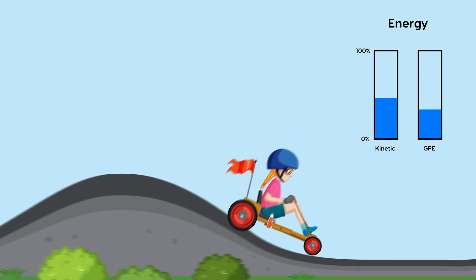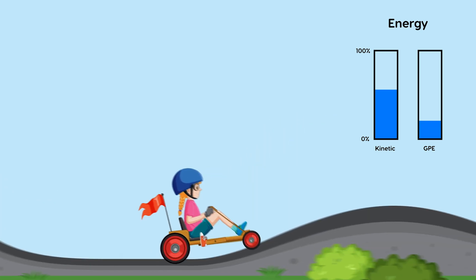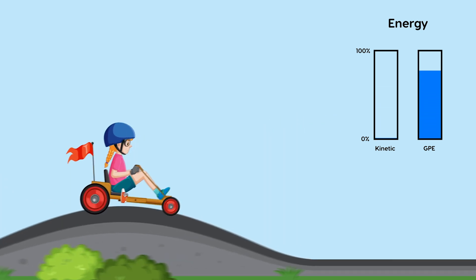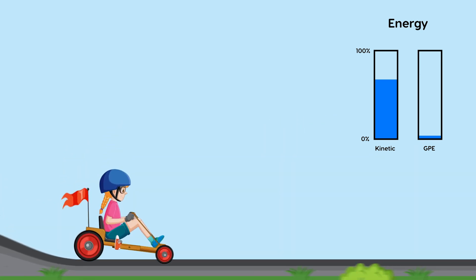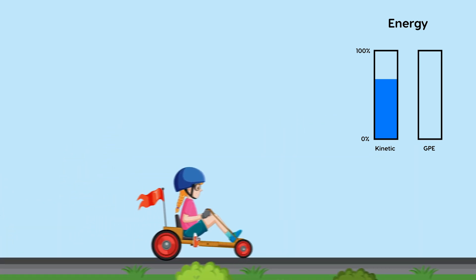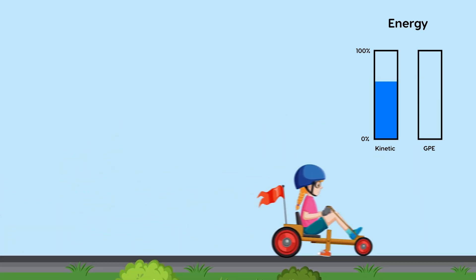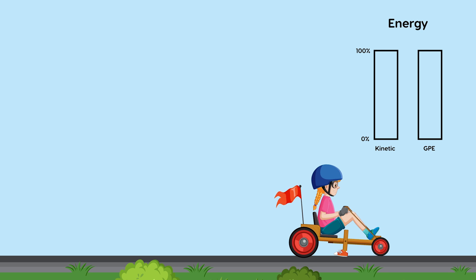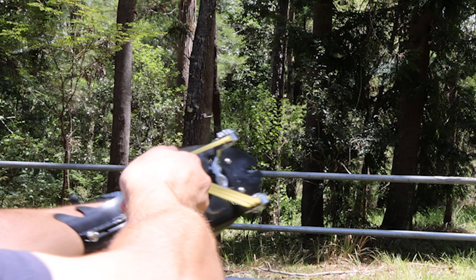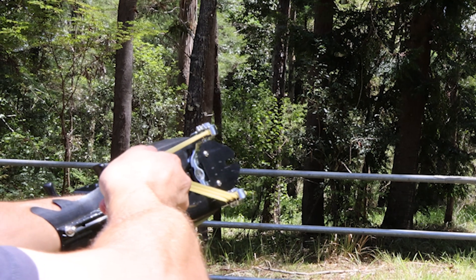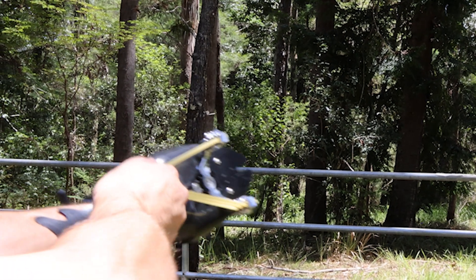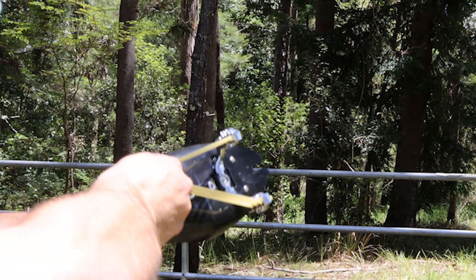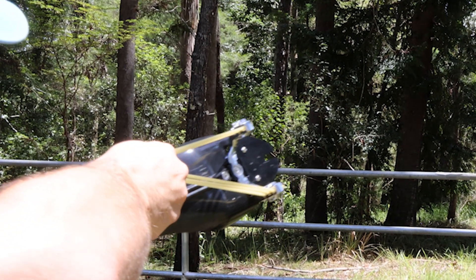And as she climbs the second hill and slows down, the kinetic energy is converted back into potential energy. Let's look at another example: when a rock is placed in a slingshot and the rubber band is pulled back, the rock gains elastic potential energy.